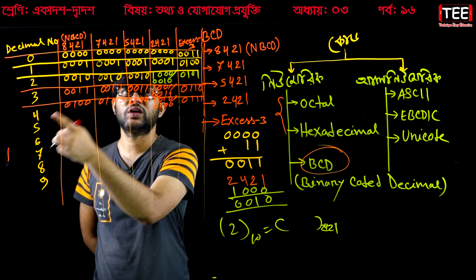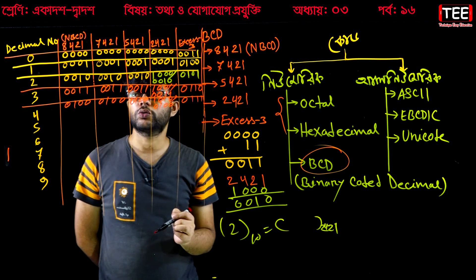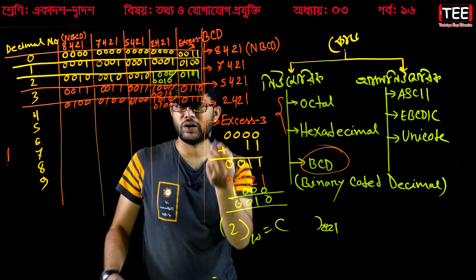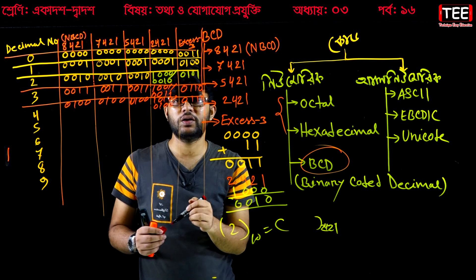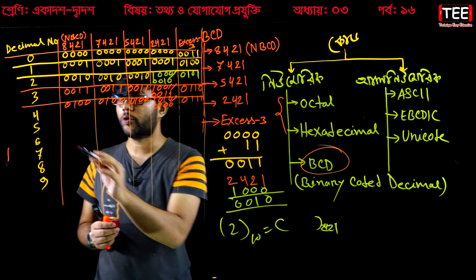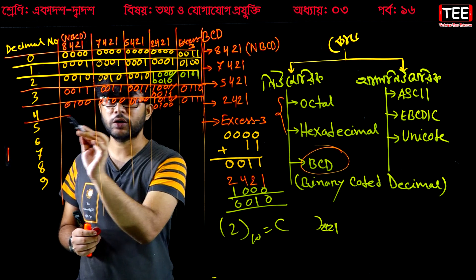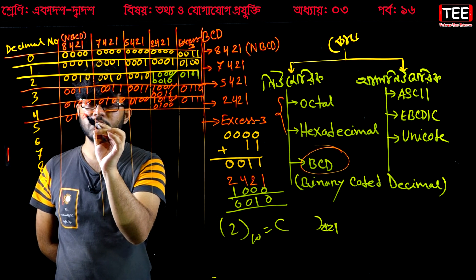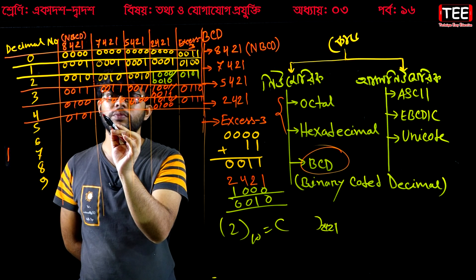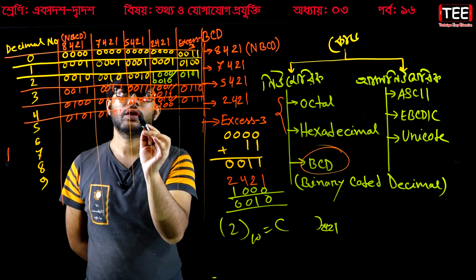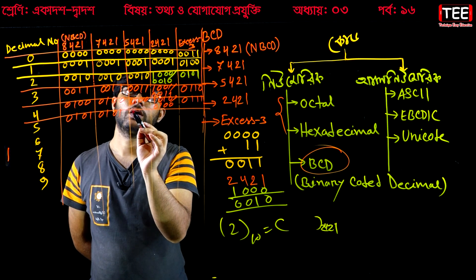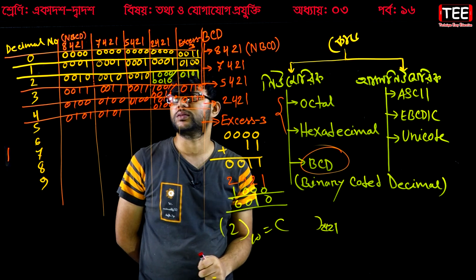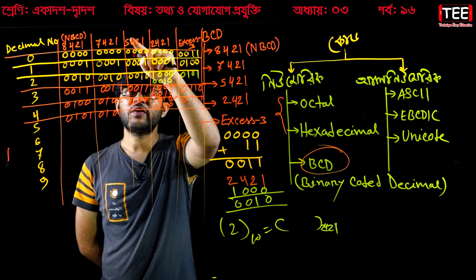We know that 7 in binary representation is 0111. And 5 is 0, 1, 0, 1. So 5 is 0101. Changing the difference — 4 is 1, 0, 0 and 5 is 0101. So the difference between the representations is noted.